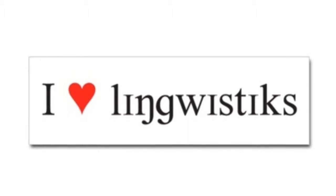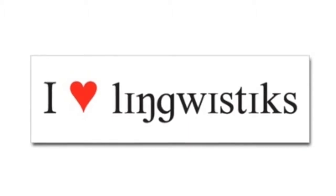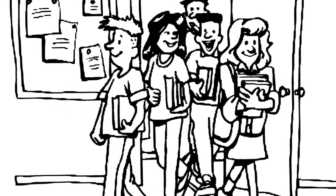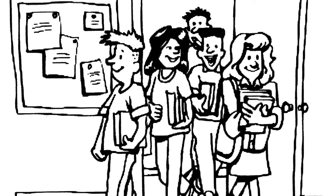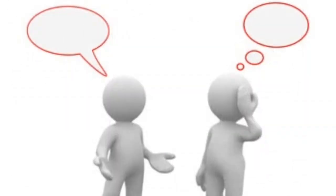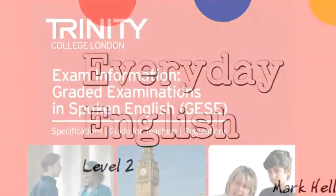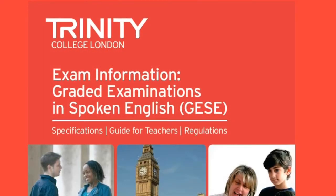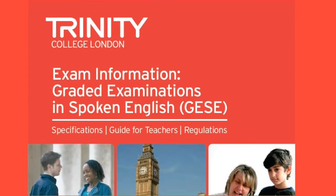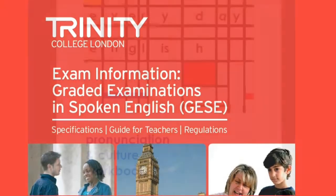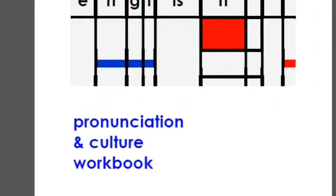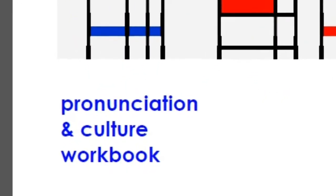I'll go into these topics in more depth in other videos. Everyday English is designed for teenagers on a short course in the UK, where the emphasis is on oral communication skills rather than passing a written exam. There are two books: one containing 12 topic-based units based on the syllabus of the Trinity College graded examinations in spoken English, and a workbook which focuses on pronunciation and aspects of British history and culture.